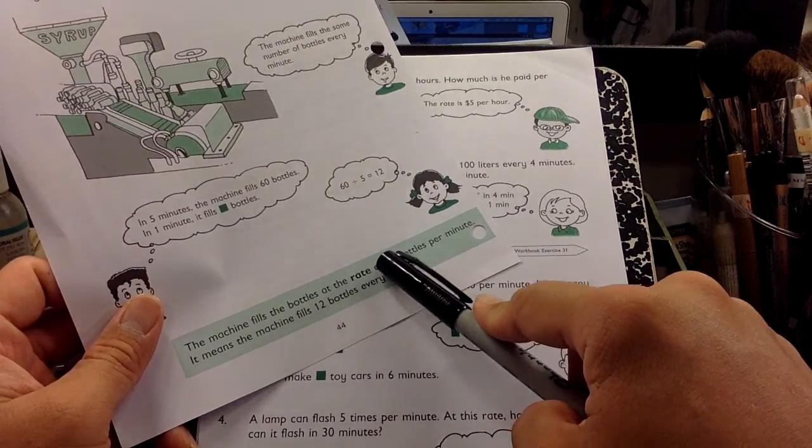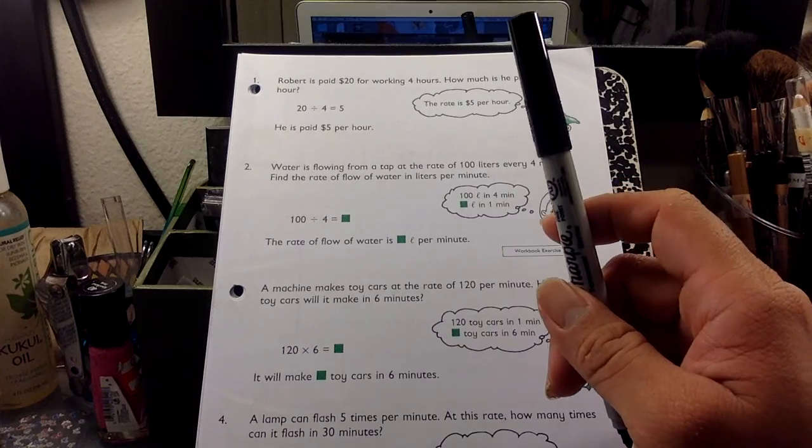So the machine fills the bottles at a rate of 12 bottles per minute. This means it fills 12 bottles every minute. Okay, that makes sense. All right, moving on.